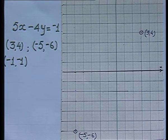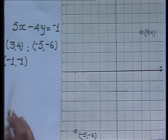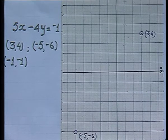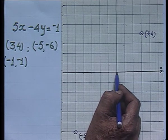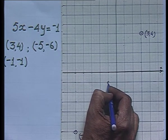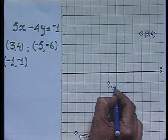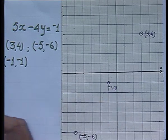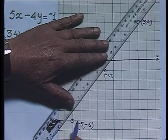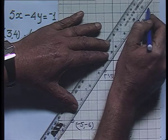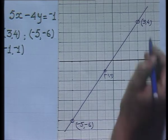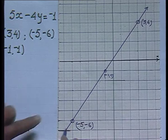Although two points are sufficient to plot a line, the third ordered pair will confirm whether the two points are correct. So we plot the third ordered pair (minus 1, minus 1) — moving 1 unit left and 1 unit down. On joining these points with a scale, all three points lie on the same straight line.